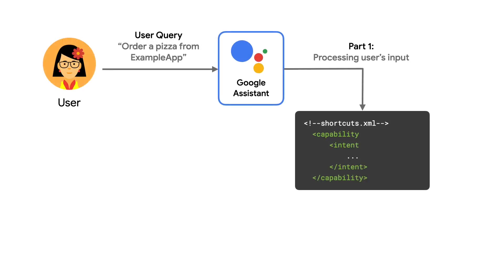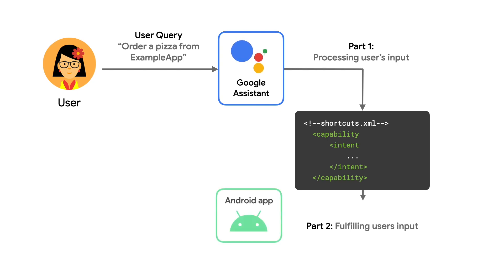So the Assistant has matched the BII of Order Menu Item and has pulled intent parameters from the user's request. It knows about your supported capabilities because they are listed in your shortcuts.xml, along with how to fulfill them. Then it launches the app using the Android intent that was declared in the capability, which jumps users straight into the app's correct screen as well as any of the parameters the user provided.